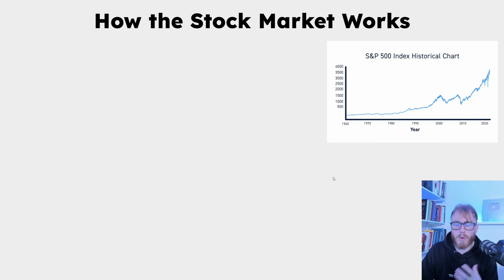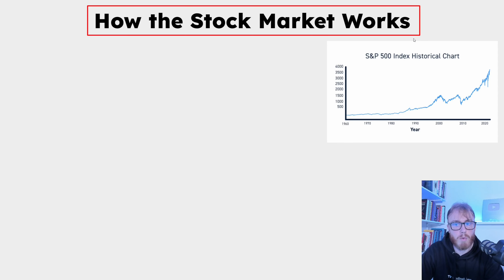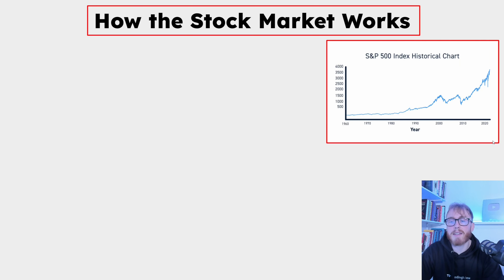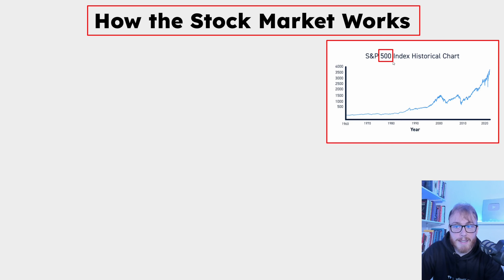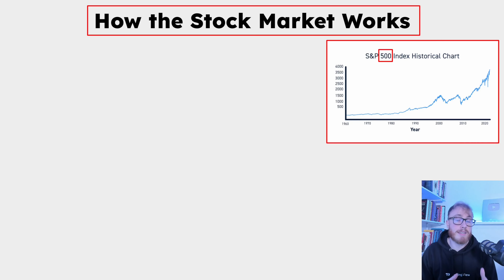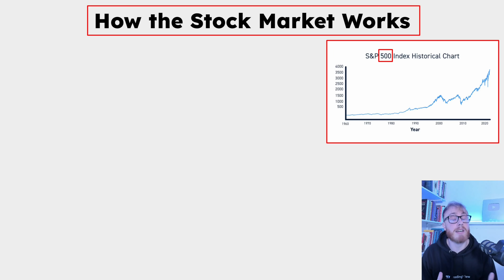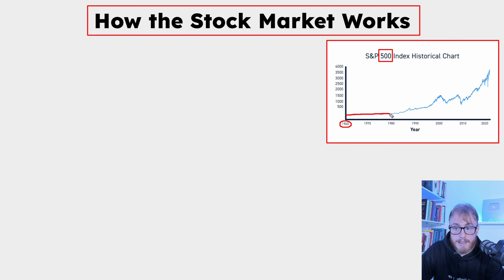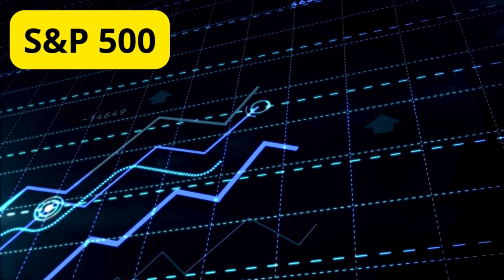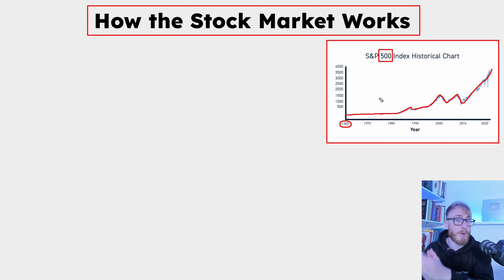Now that we know some important stock market definitions and basics, let's take a quick look at how the stock market works. On screen you can see the S&P 500 chart, which is a stock market index. The S&P 500 is basically a basket of stocks — in this particular index, we have 500 of the largest companies in the US. This chart starts back in 1960, and by looking at it we can see how the stock market has performed as a whole. When the S&P 500 is going up, the stock market is going up on average.